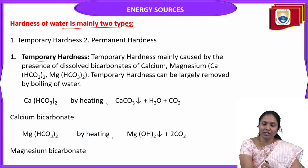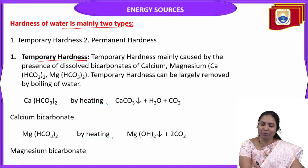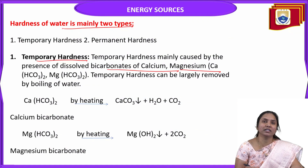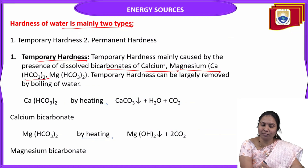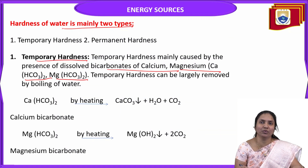What is the meaning of temporary hardness? Temporary hardness is mainly caused by the presence of dissolved calcium bicarbonates and magnesium bicarbonates present in water. Water containing these salts is considered to have temporary hardness.